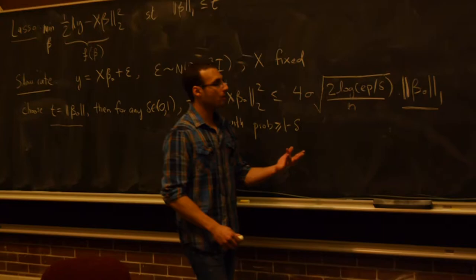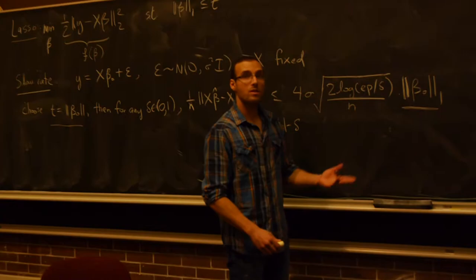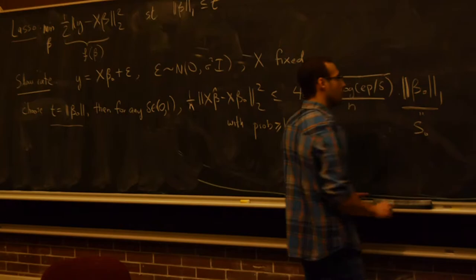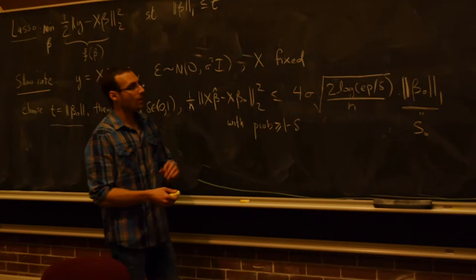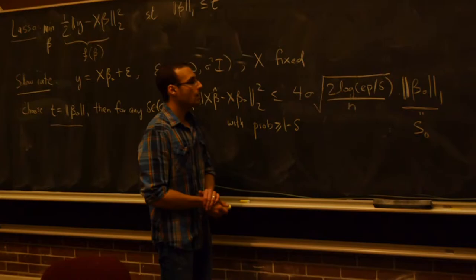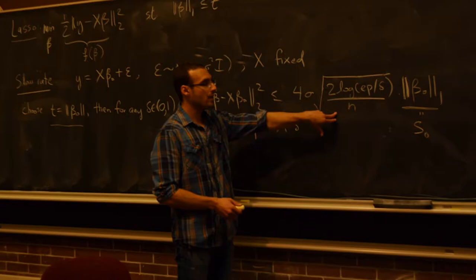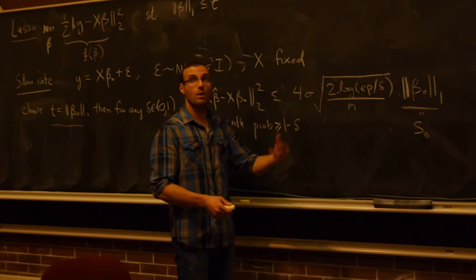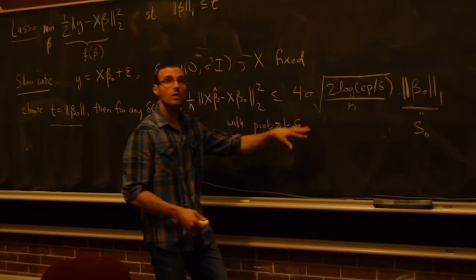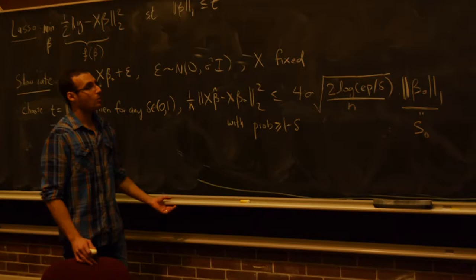If the L1 norm of the underlying coefficients grew more slowly than root(log p / n), then the whole bound goes to zero as n and p go to infinity, making the lasso consistent in a high-dimensional scenario. If each coefficient has magnitude one and there are s-zero non-zero coefficients, then the L1 norm is just s-zero, giving a bound of four times s-zero times root(log p / n). Compare that to subset selection which achieves the order s-zero times log(p)/n — a whole lot faster.